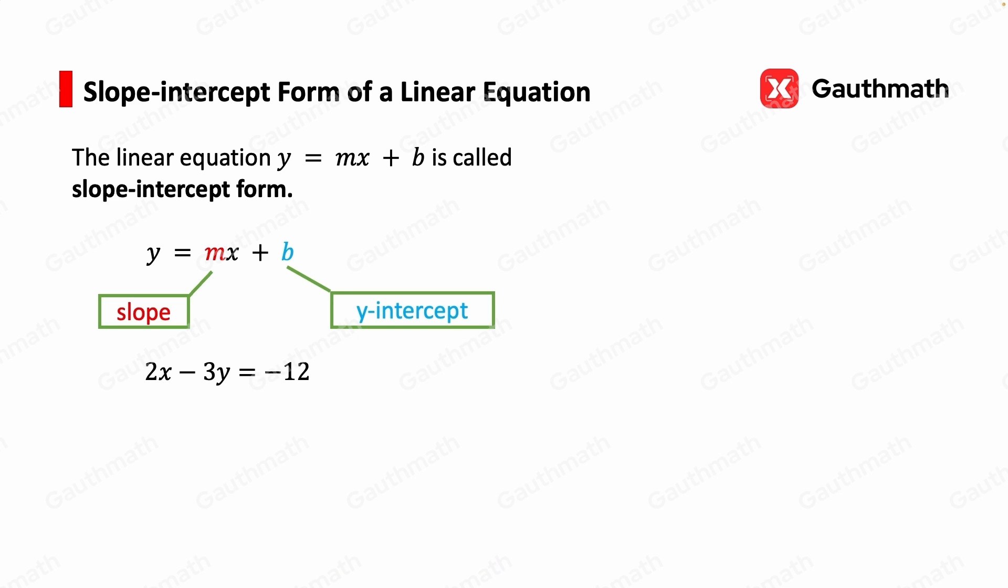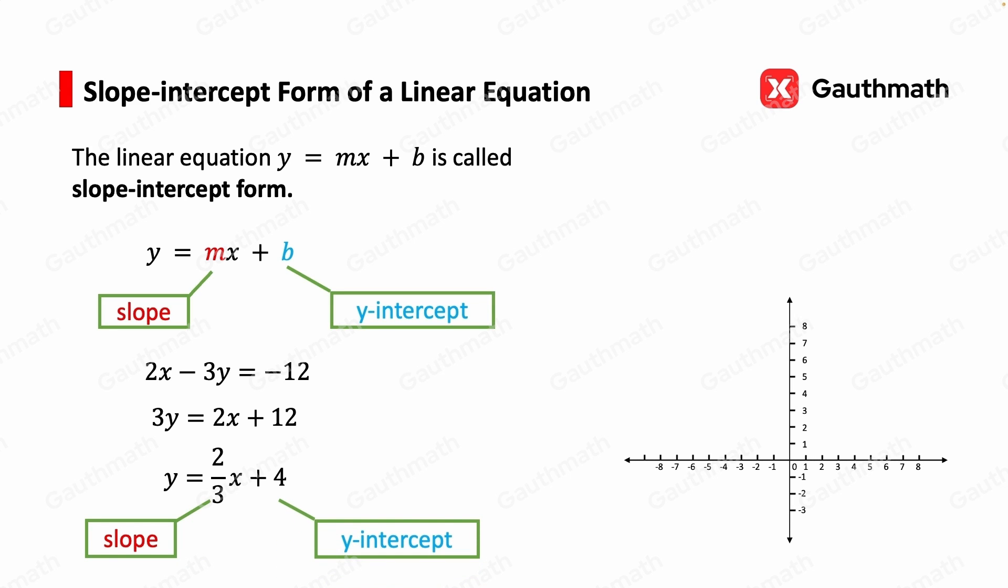Remember the example we had in previous videos, 2x minus 3y equals negative 12. After solving for y, meaning isolating y on the left side of the equation, we get y equals 2 thirds x plus 4, where the slope is 2 thirds, and the y-intercept is 4.